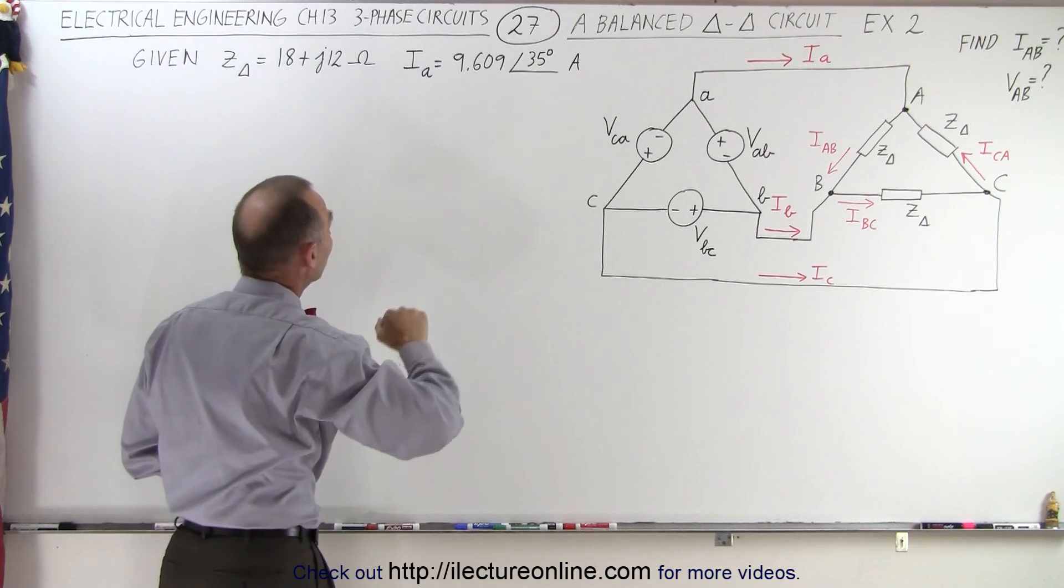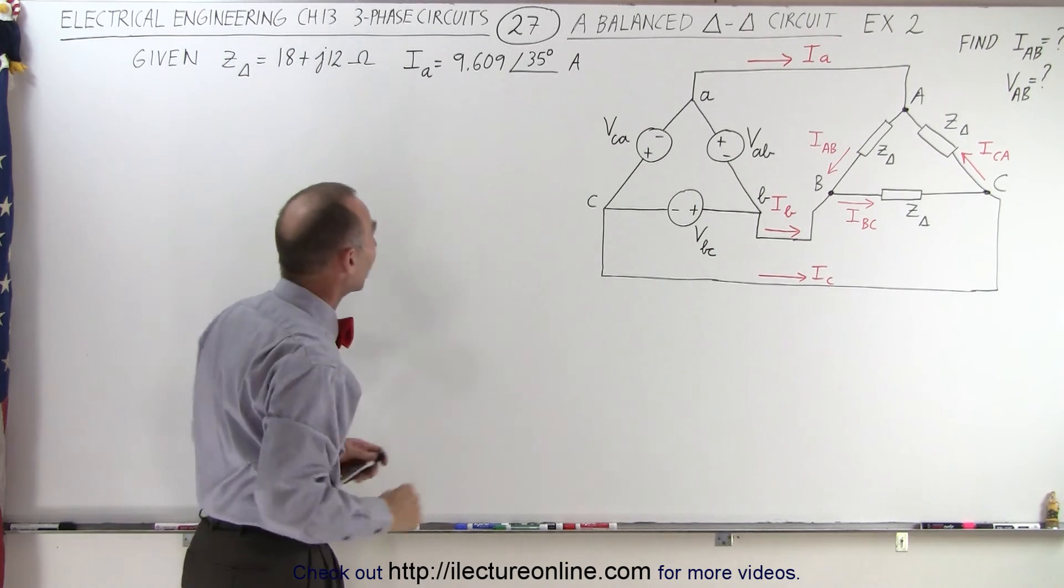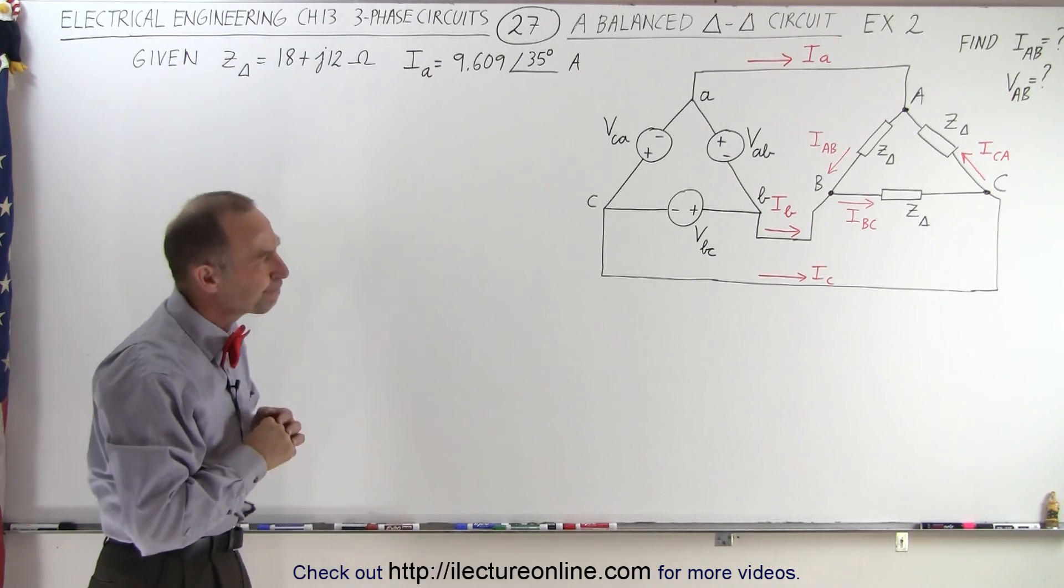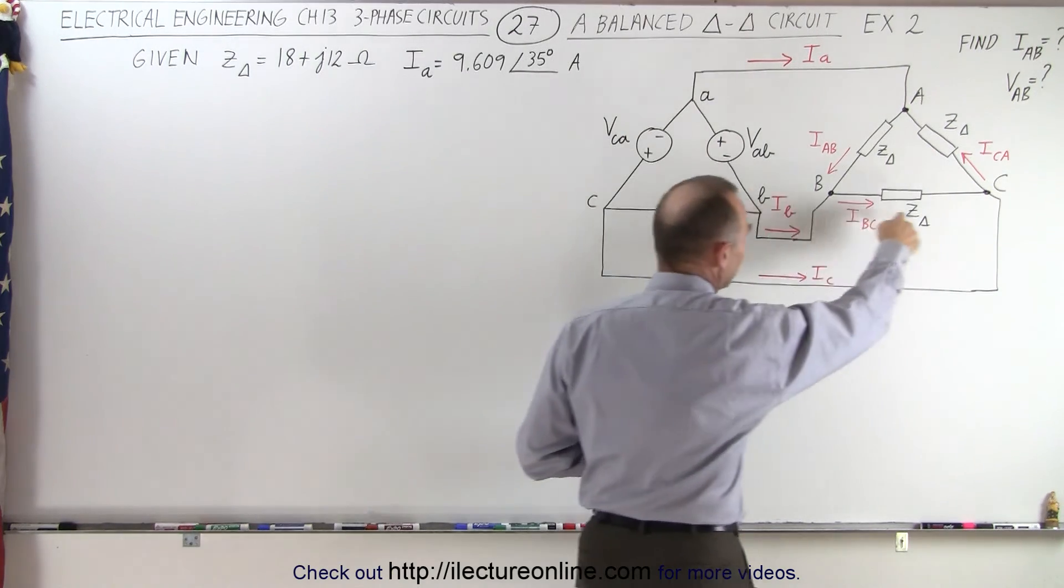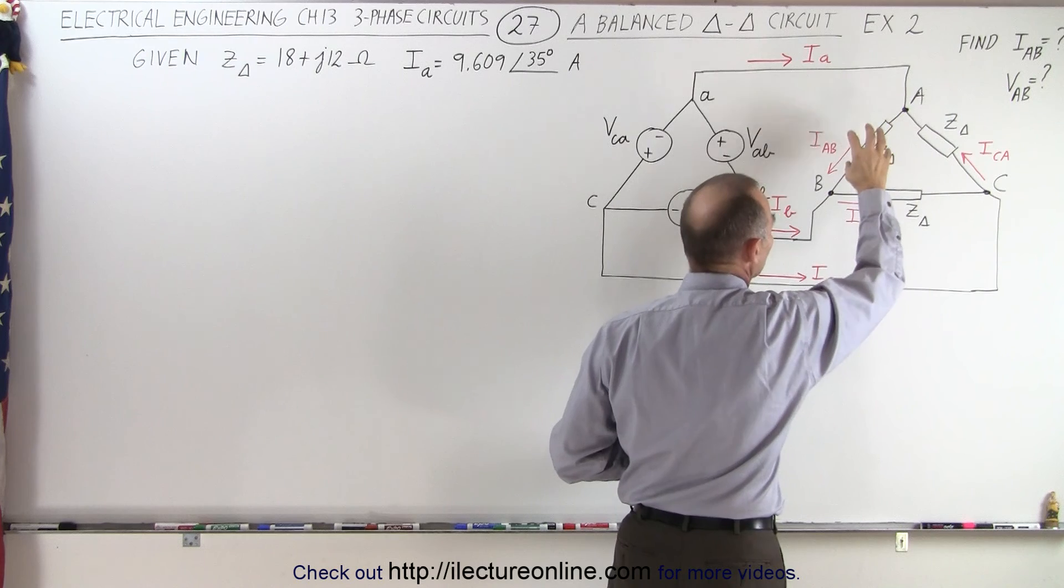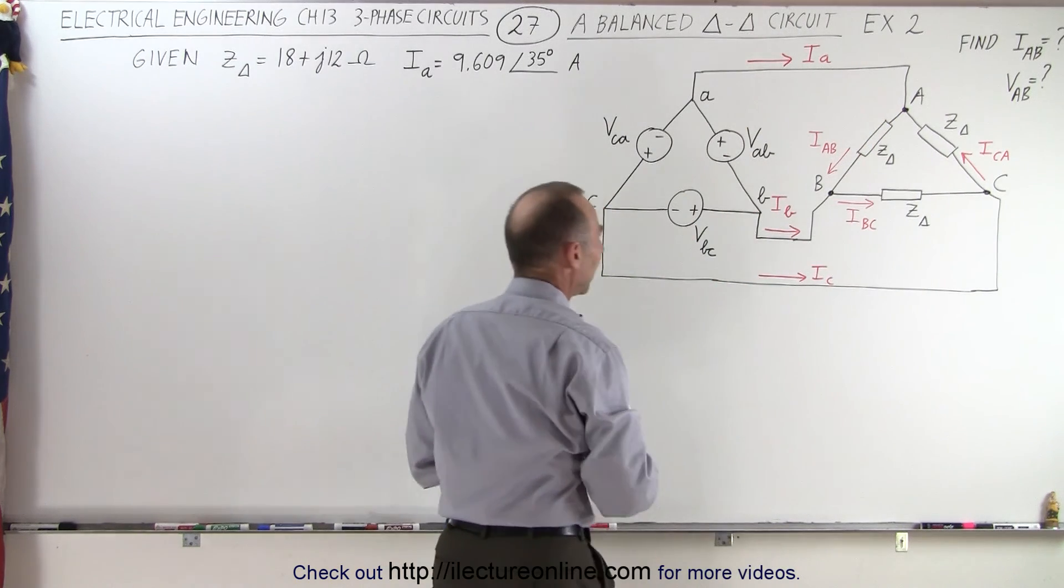Again, the impedance must be the same for a balanced impedance, and we're given the line current I sub A. How do we do that? Well, first of all, let's go to the load, and we know there's a relationship between the current, the voltage, and the impedance.